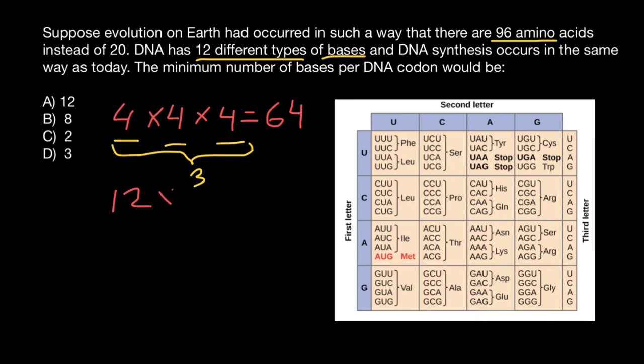And with two positions, we are going to have 144 different combinations. As you see, this is enough to specify 96 amino acids and also stop codons and start codon. So in this fictional situation where we have only 12 different bases and 96 amino acids, we just need two positions in one codon to specify all these 96 amino acids.